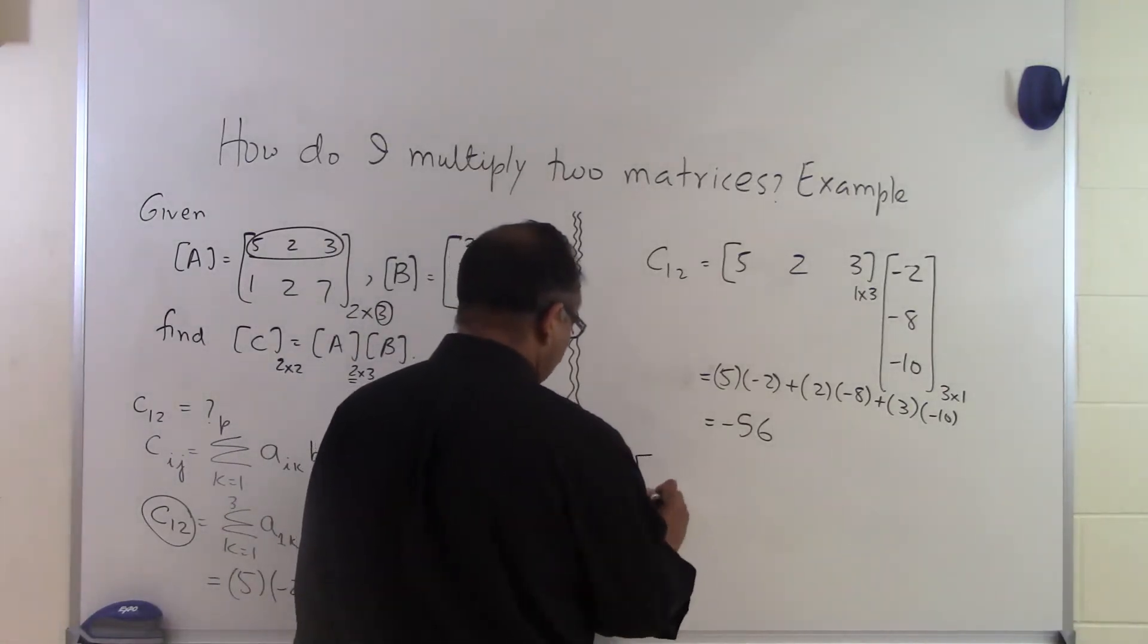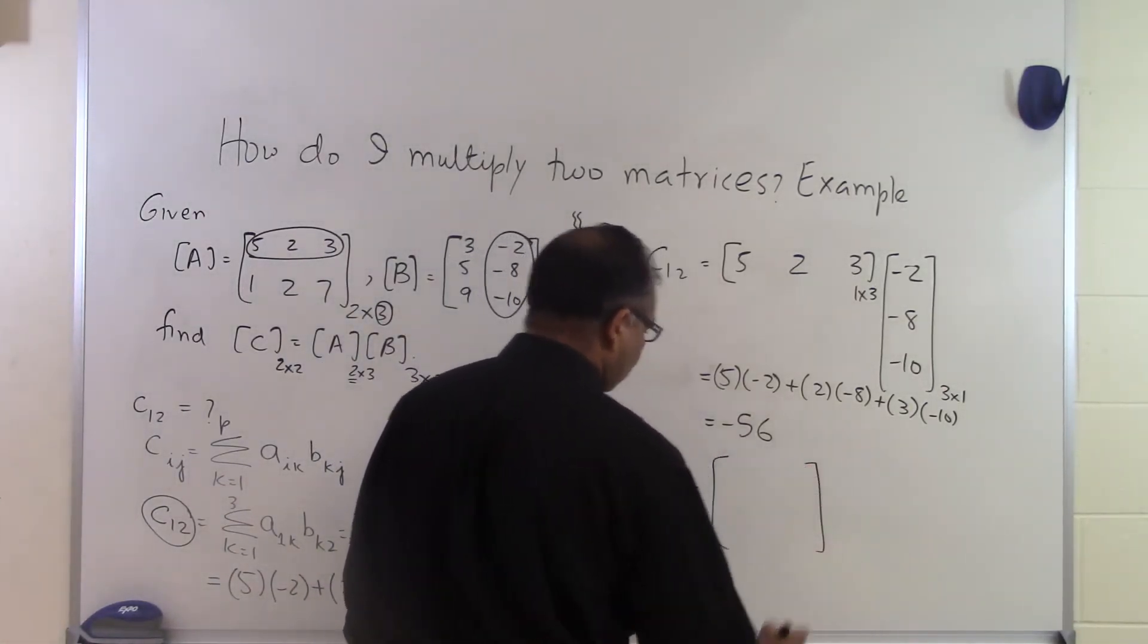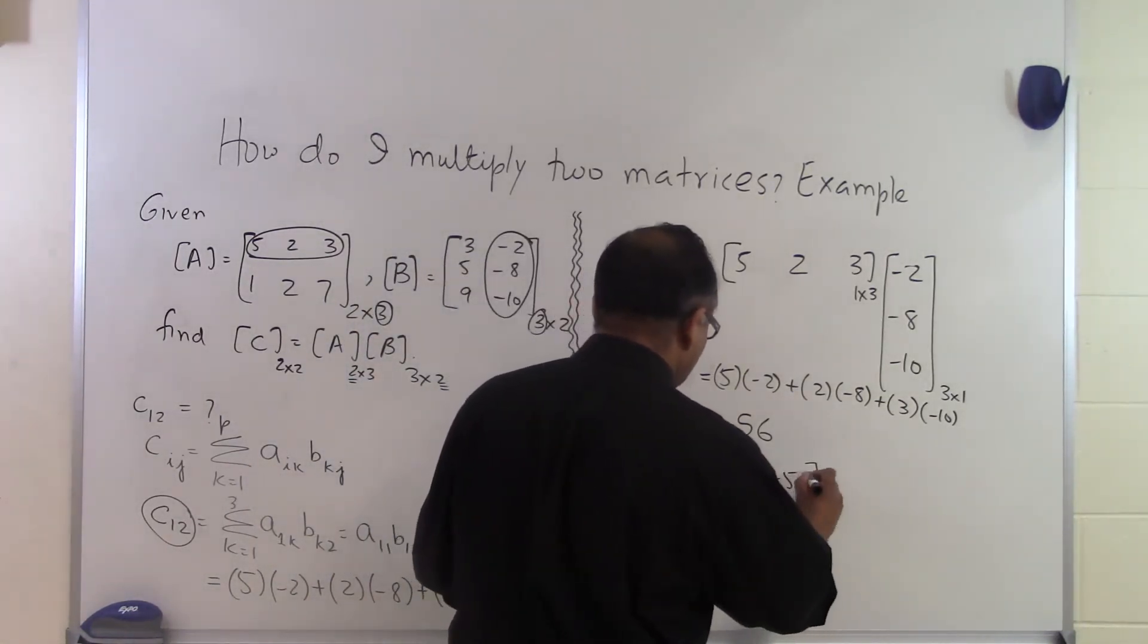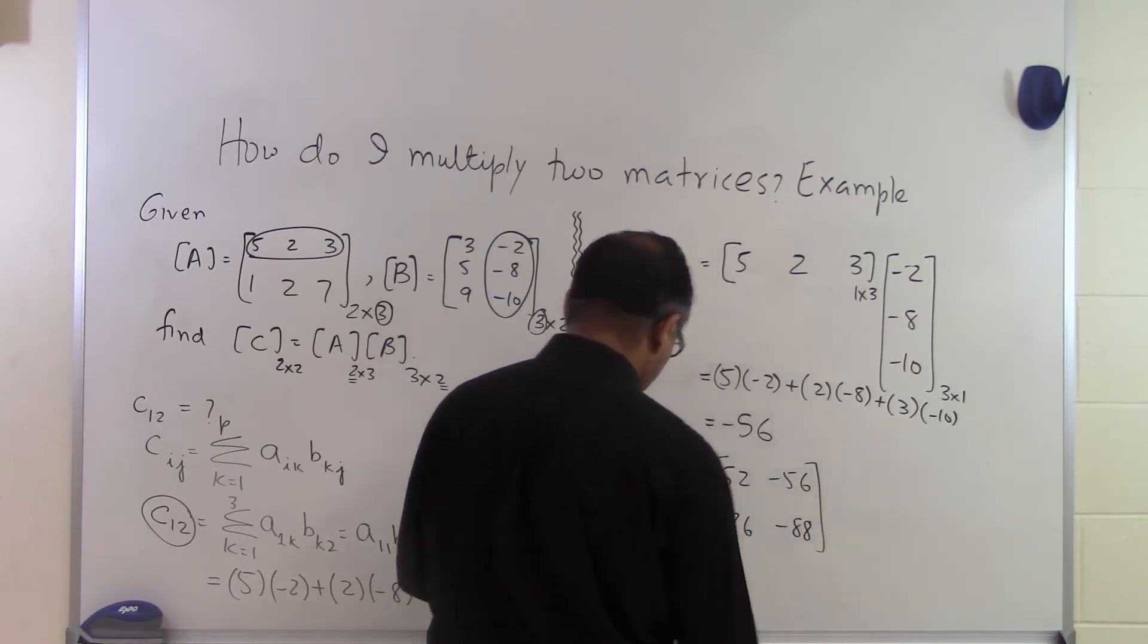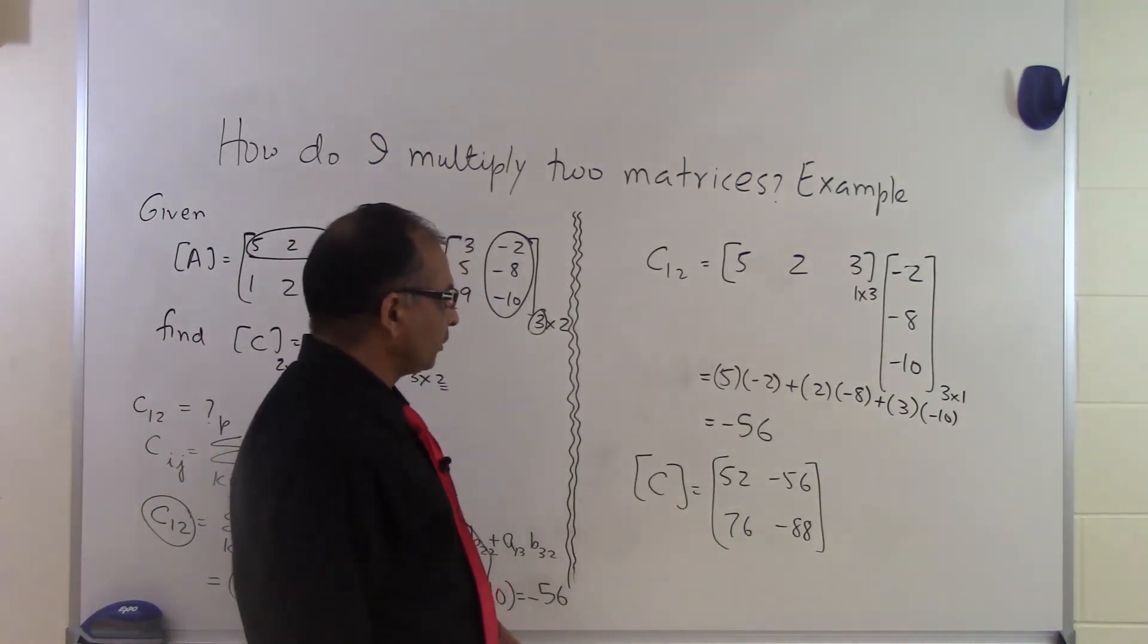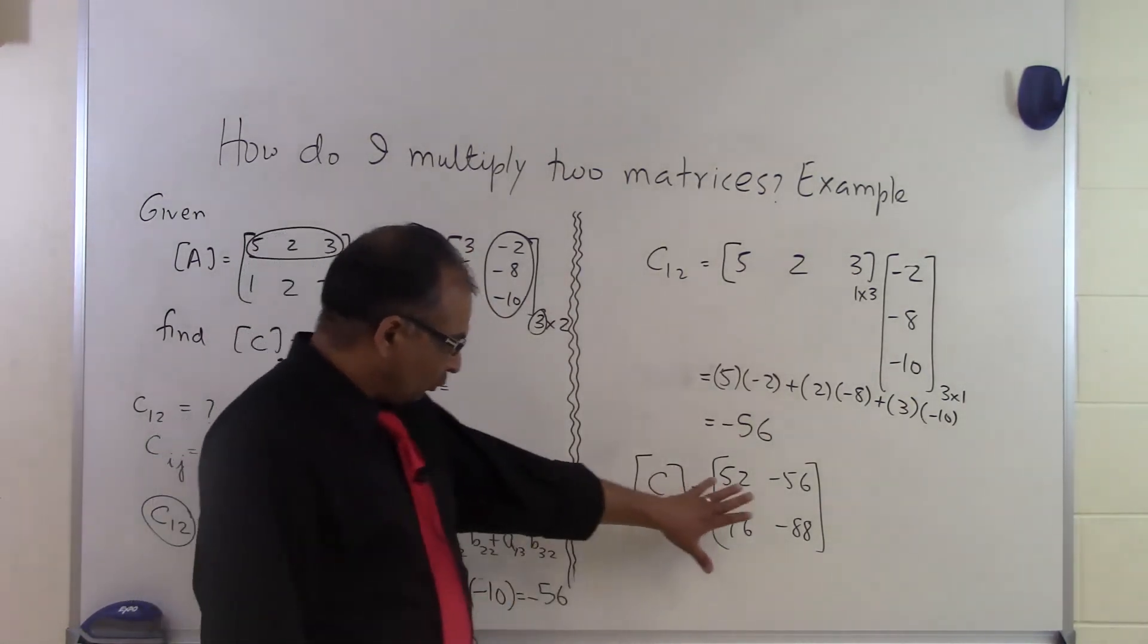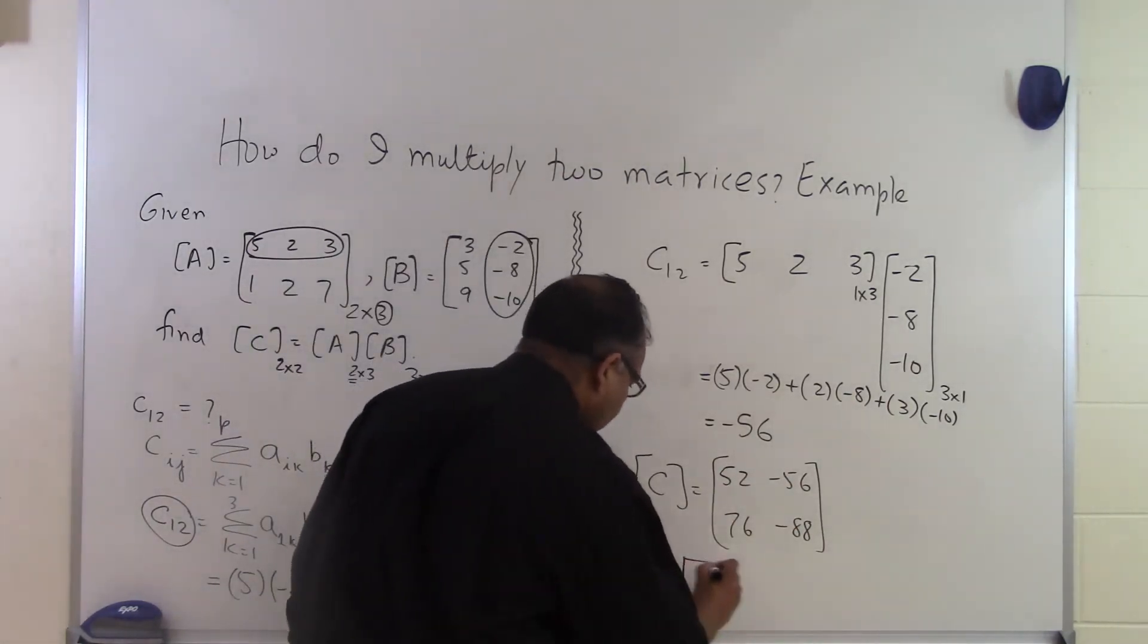You can follow the same procedure which I just mentioned here to find the other elements of the 2 by 2 matrix and they will turn out to be 52, minus 56, 76 and minus 88. And if you follow the same procedure either by finding the dot product of two vectors or by using the summation formula itself you will be able to find the other elements of the matrix. And that is the end of this segment.